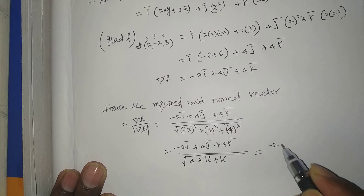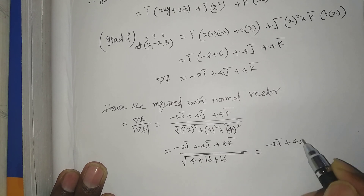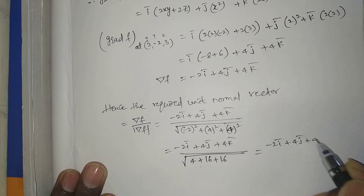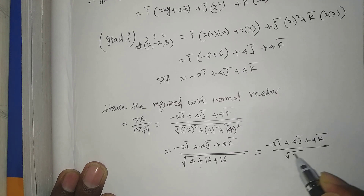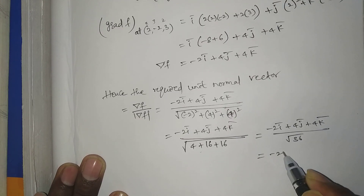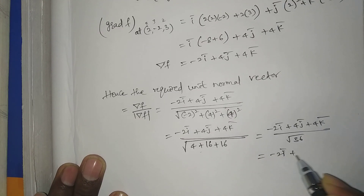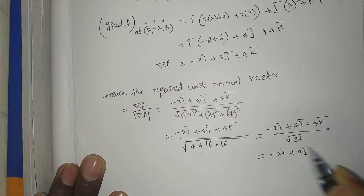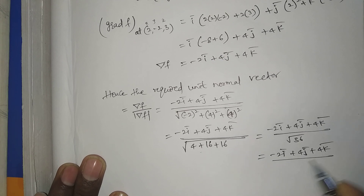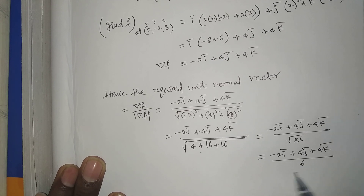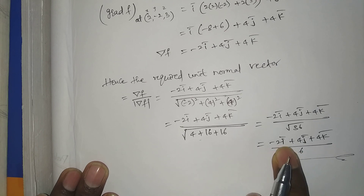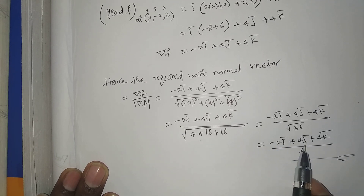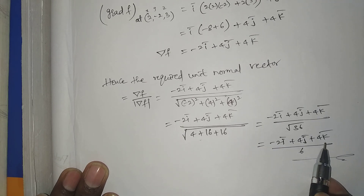So the unit normal vector equals (minus 2 i-bar plus 4 j-bar plus 4 k-bar) divided by 6. Taking 2 as common factor, this simplifies to (minus i-bar plus 2 j-bar plus 2 k-bar) divided by 3.